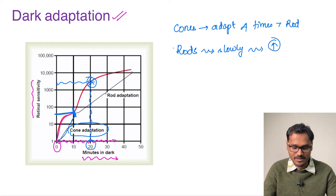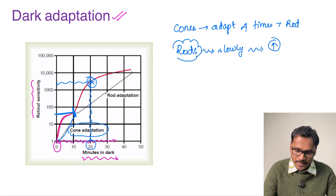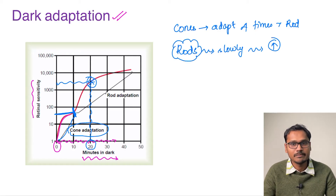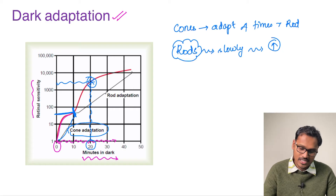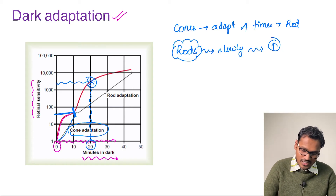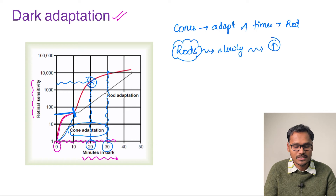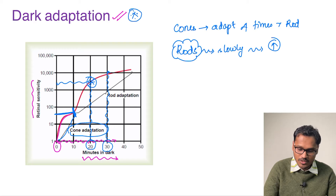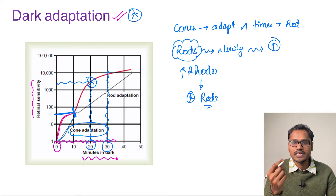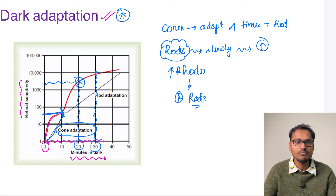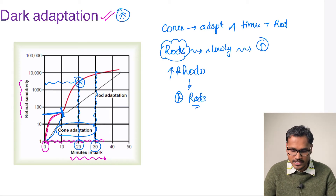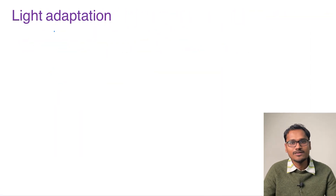The rods adapt slowly, but they can increase the sensitivity of the retina to very high levels. In just 20 minutes of darkness, rod adaptation can take sensitivity up to 6000 times from the baseline. The sensitivity of the rod can go up to the million-fold level. Within 30 minutes of darkness the person will be able to adapt to the maximum limits with the help of rods. So in dark adaptation, more and more rhodopsin is formed, increasing rod sensitivity, while cones contribute initially but minimally in the long run.